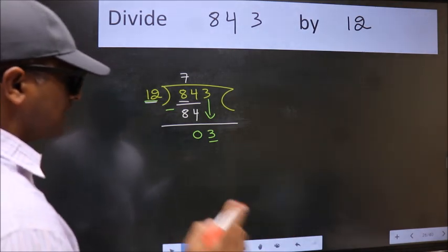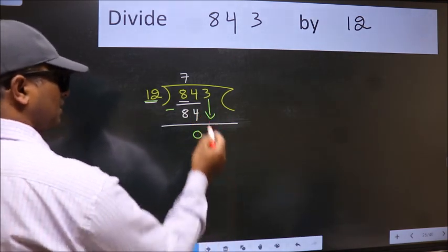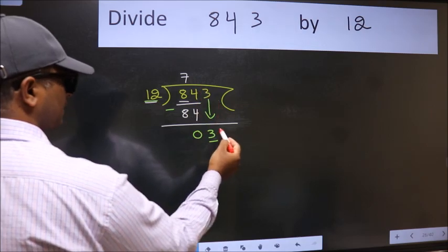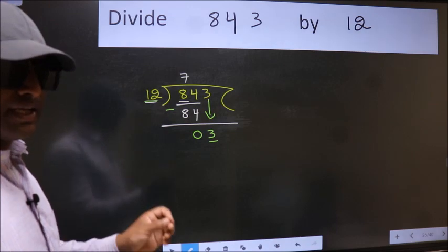Because you just brought this number down, and in the same step, you want to put a dot and take 0, which is wrong. I repeat: